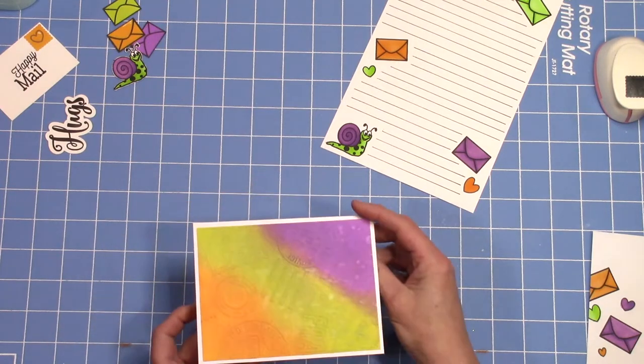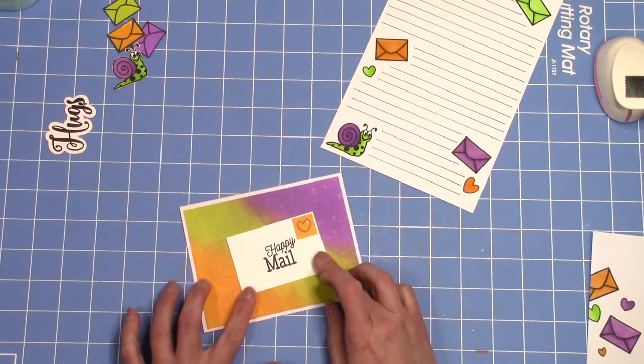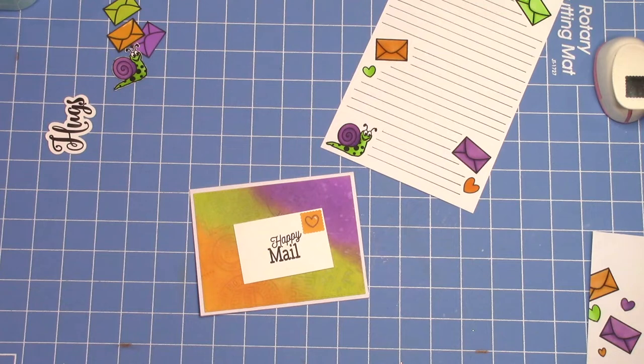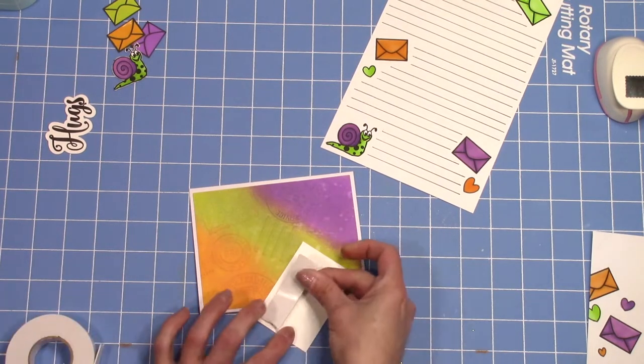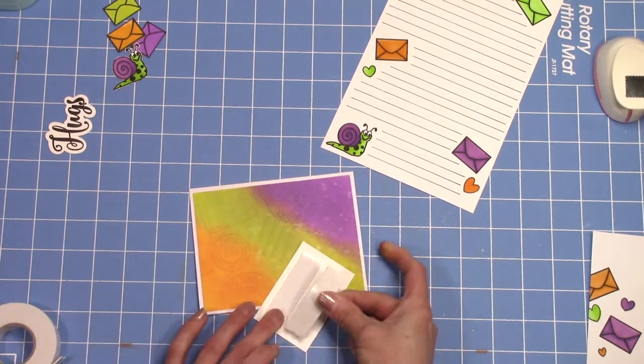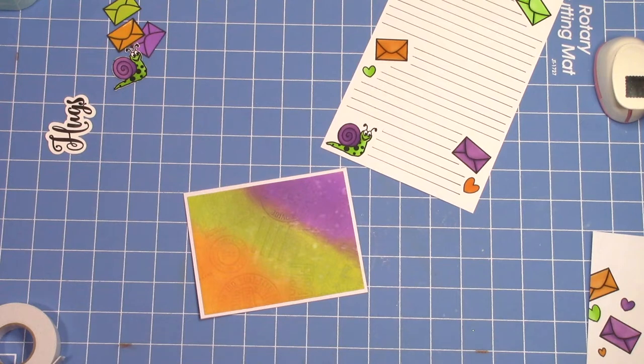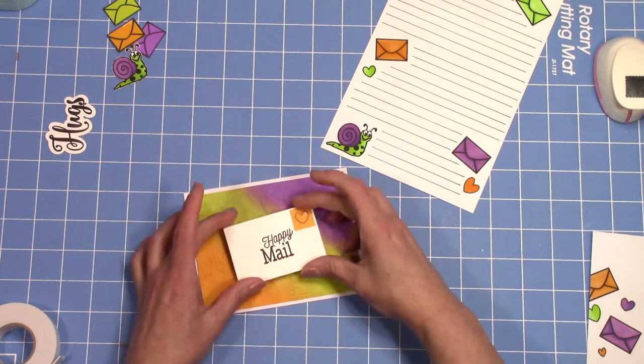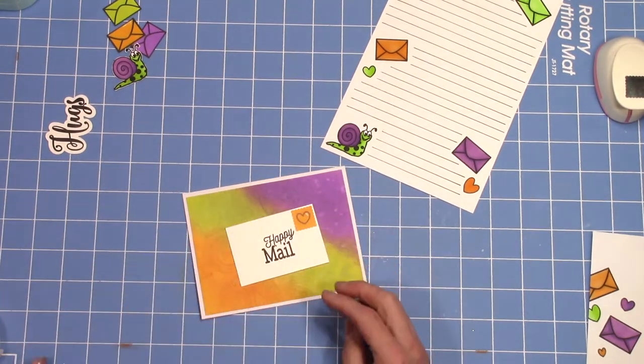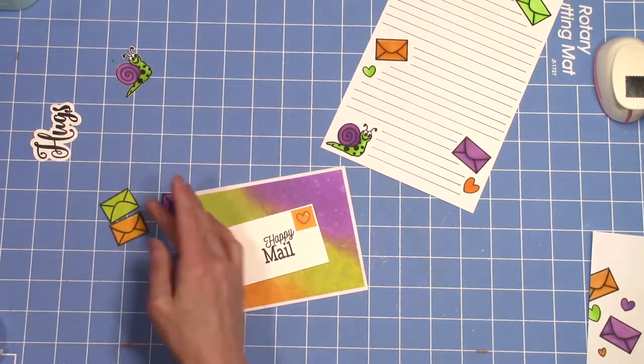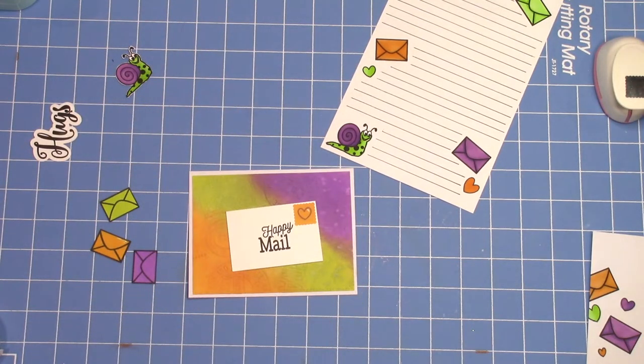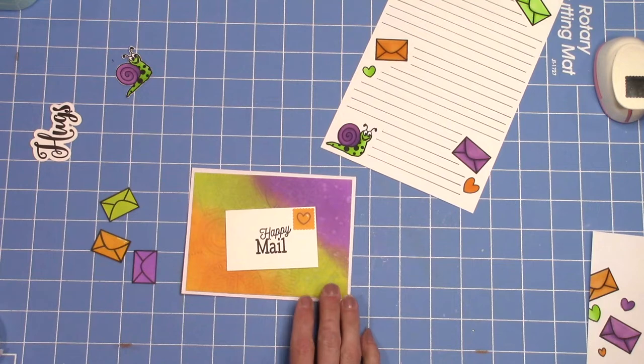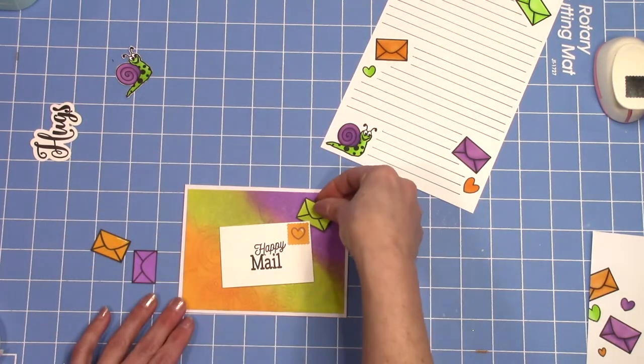Now we're just going to put our card together. This is actually a pretty fast project. We're going to pop up our letter in the middle and then arrange all of our little extras that are already fussy cut out and ready to go up there in the top corner around the letter. I just think this makes a really cute thing to send to somebody that you're going to write a letter to.